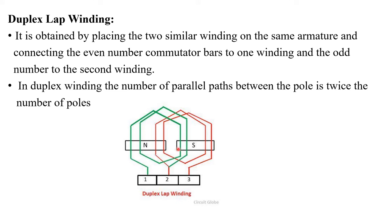In duplex lap windings, the number of parallel paths will be twice that of the number of poles. That point is also very important for technical exams. So if there are P number of poles in duplex lap windings, then twice P will be the number of parallel paths. The next coil will start from the second commutator segment, wound like this, and then connected to the third commutator segment.